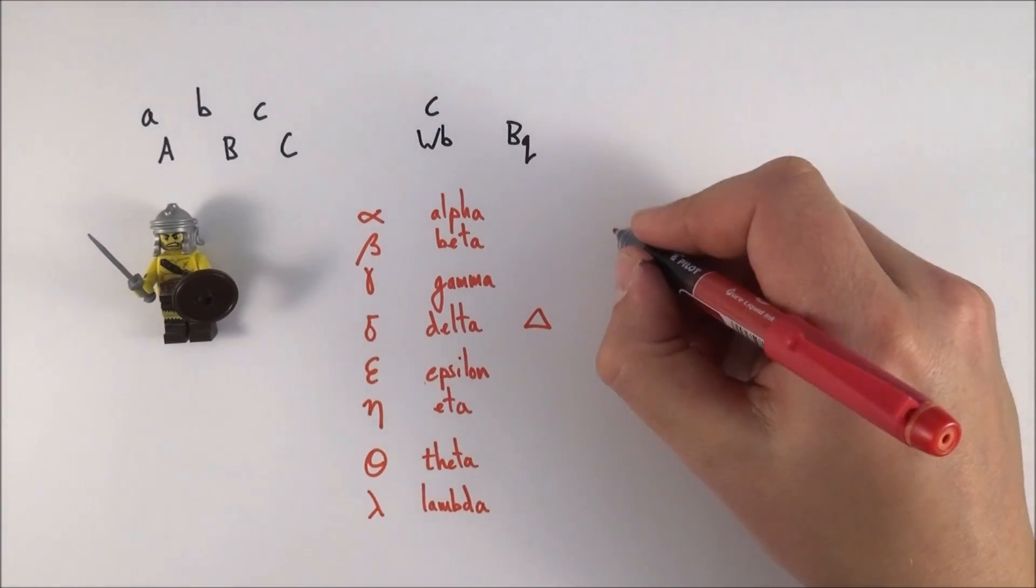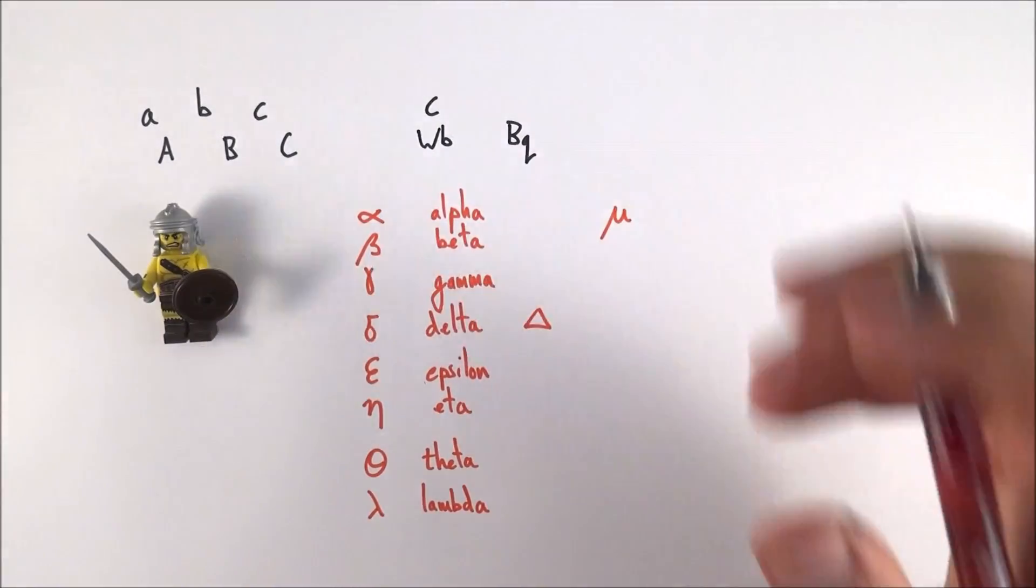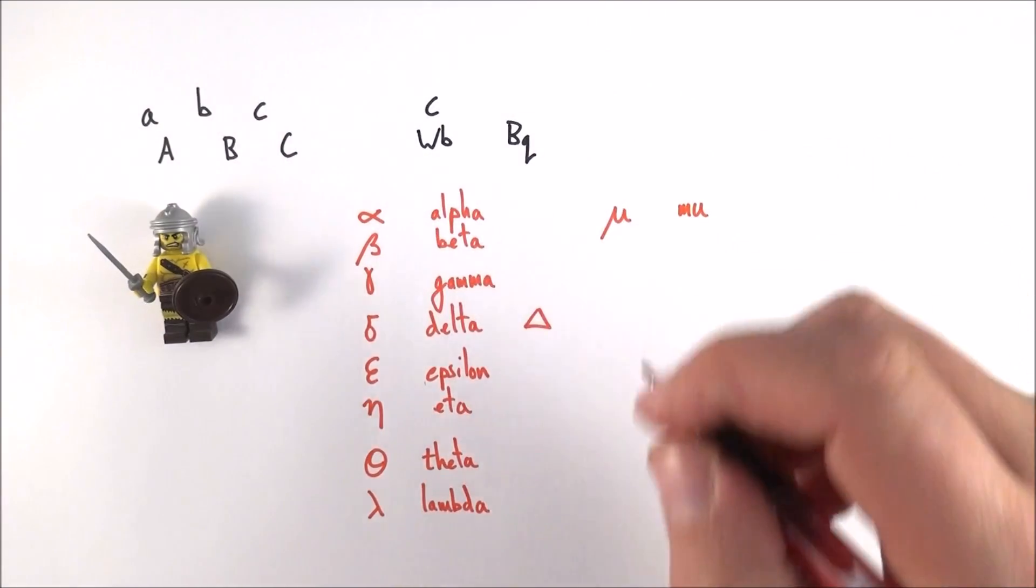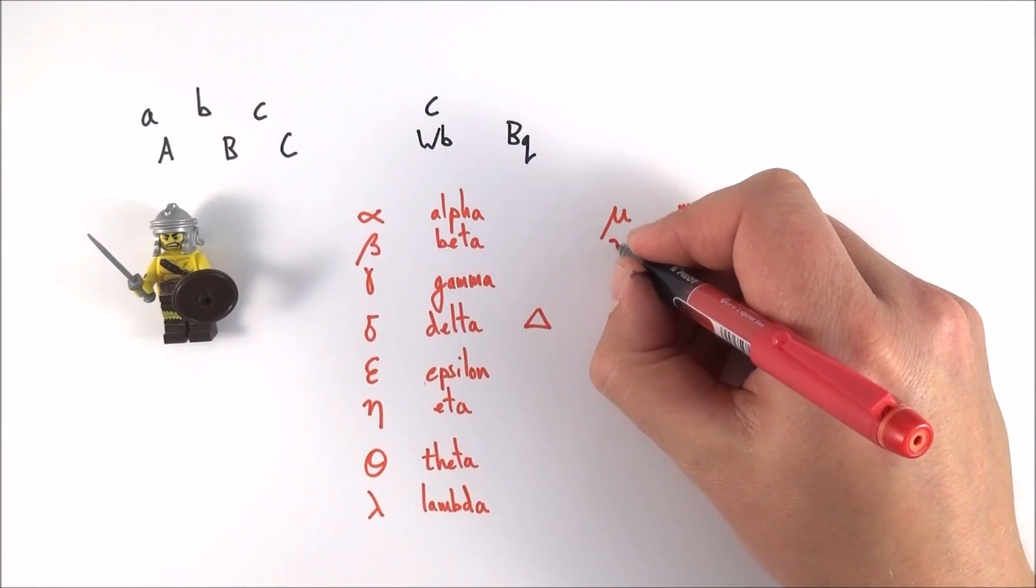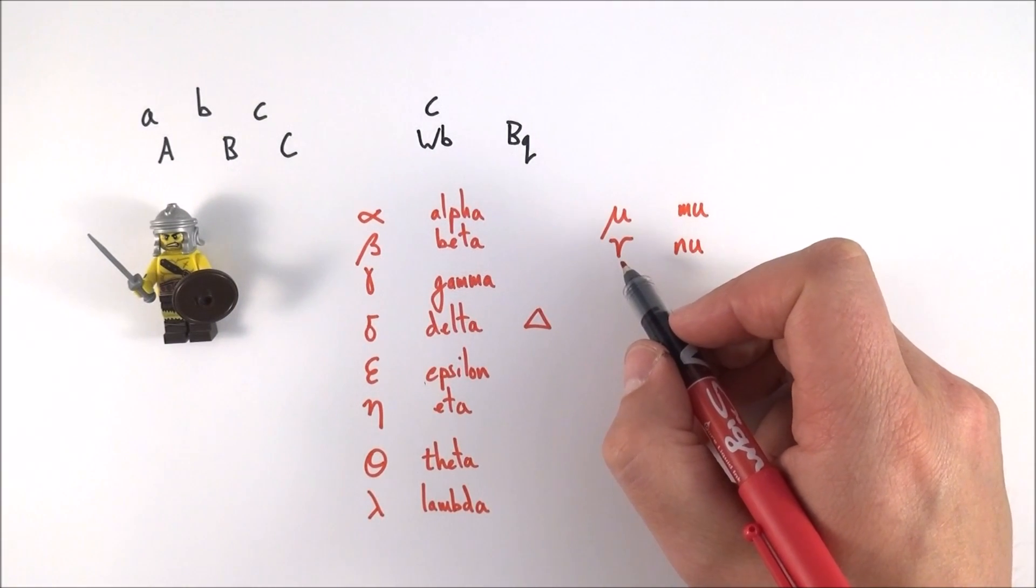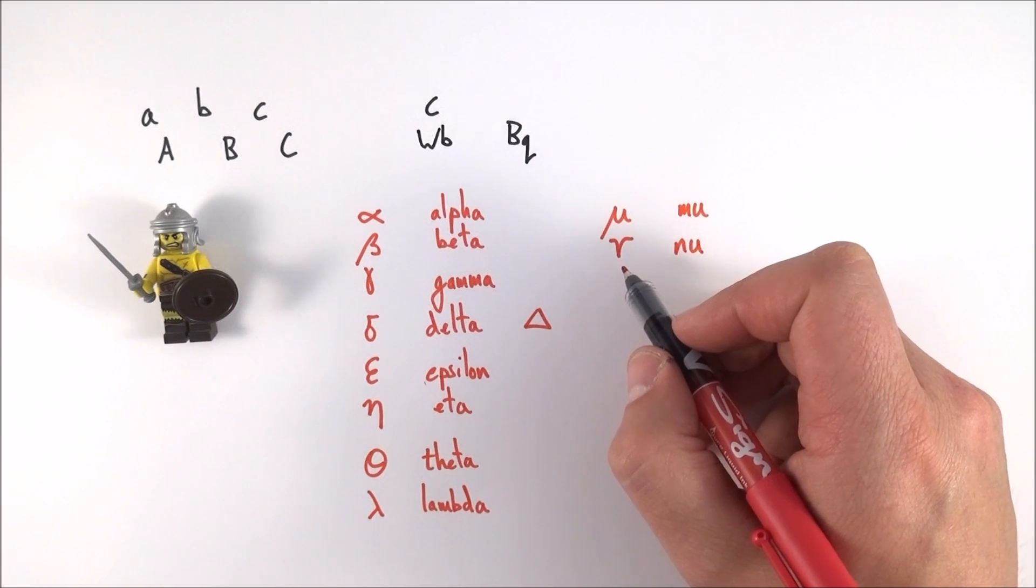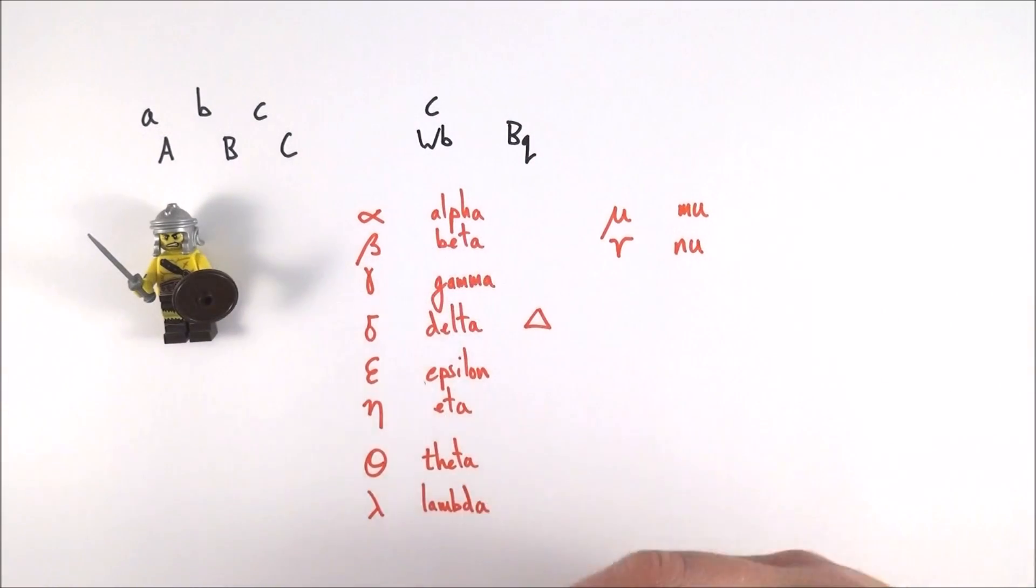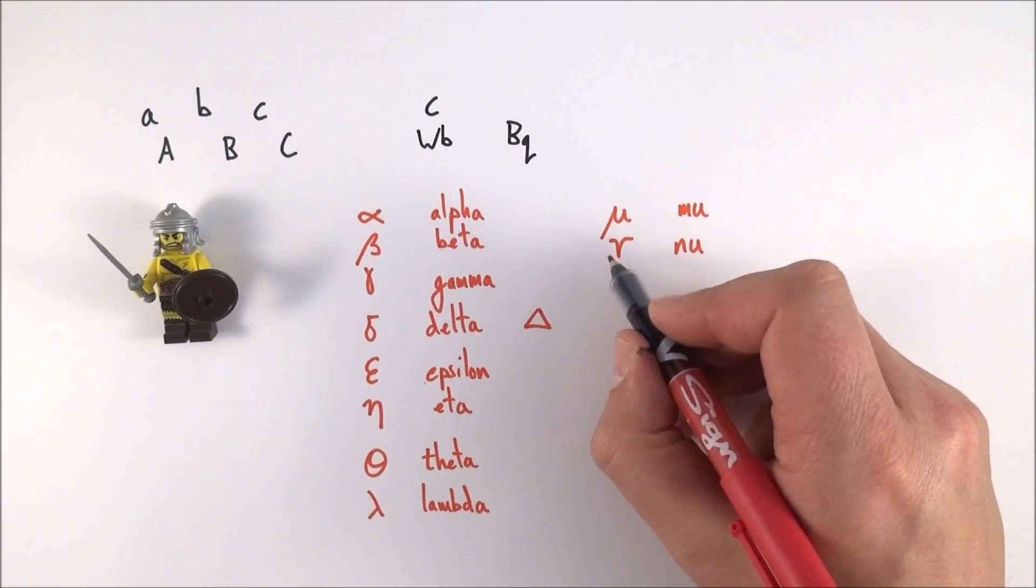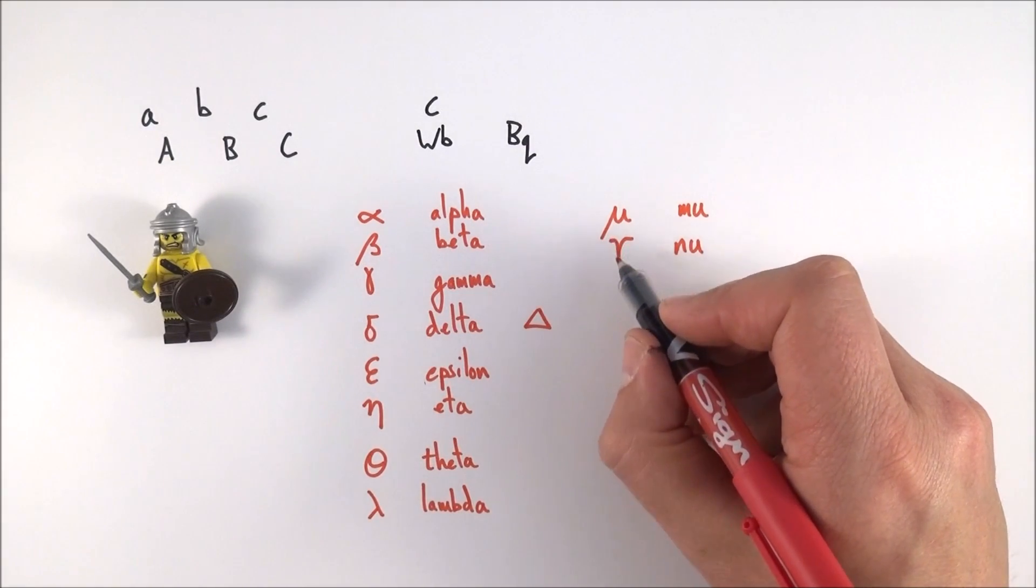After this we've got something which we use to represent 10 to the minus 6, and this is the letter mu, followed by the letter which is like a curly v, which is nu. This one here, when you come on to looking at neutrinos, which are these kind of massless particles given out when beta radiation is given off—these neutrinos, it's basically like a little curly v.